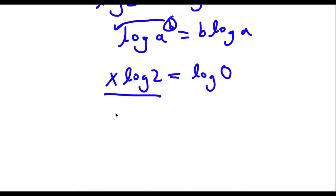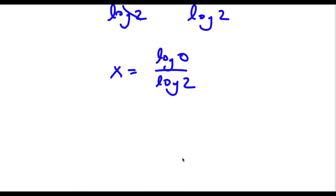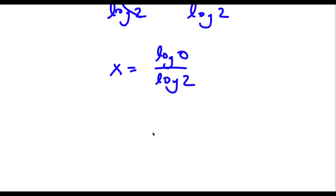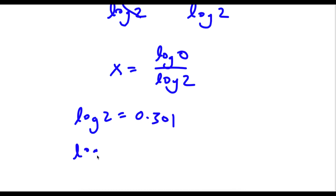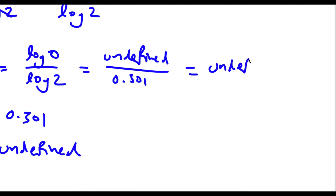Now I can go ahead and divide both sides by log 2 because I want to isolate x. So these two cancel out and I'm left with x is equal to log 0 over log 2. Now log 2 is equal to 0.301, and log 0 is actually undefined. So now I have undefined over 0.301, and this means that our answer is undefined, because you can't divide undefined over 0.301 — undefined is already undefined.